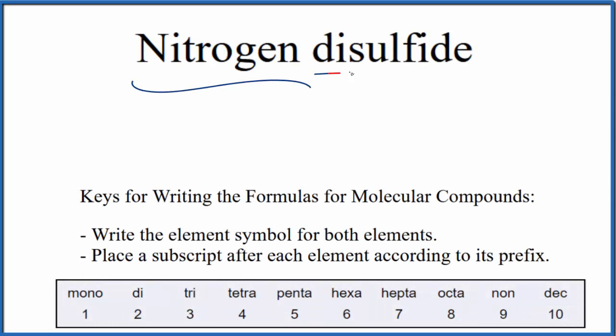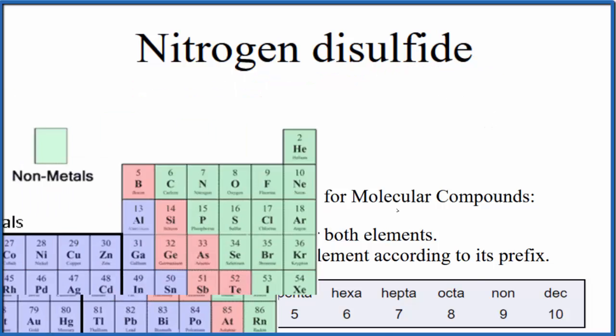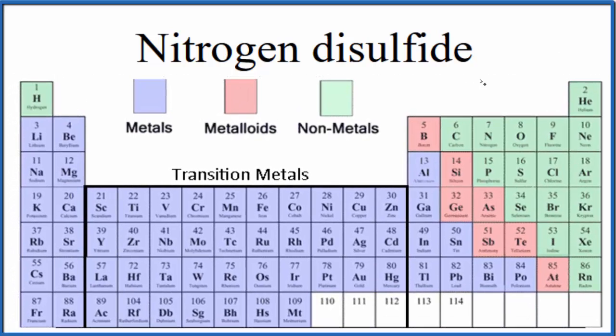To write the formula for nitrogen disulfide, we first need to determine what type of compound we have. So if we look at the periodic table organized by metals, metalloids, and nonmetals...